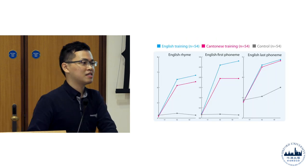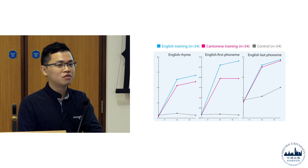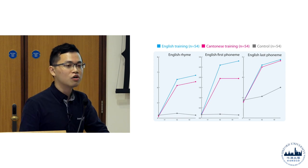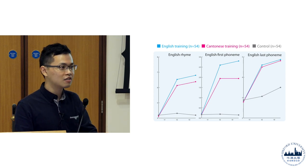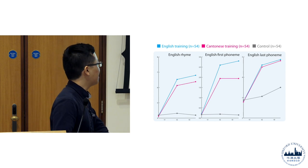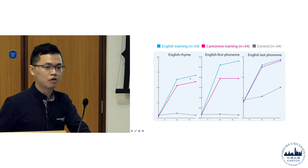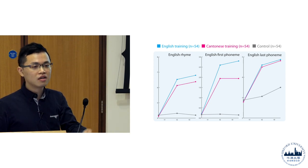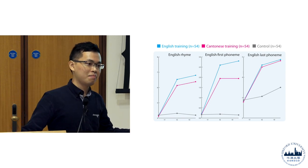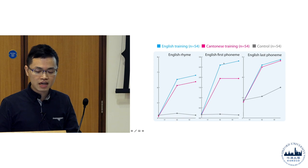Let's talk about the results. There are a lot of things to digest from this chart. These three are the measurements of English. Let's look at the blue line — it represents the English training group. As you can see, for the English training group in the English measure, the blue line outperforms the control group a lot across all three kinds of measures. So that's what I promised parents: if your child got into the English training group, their English performance will increase.